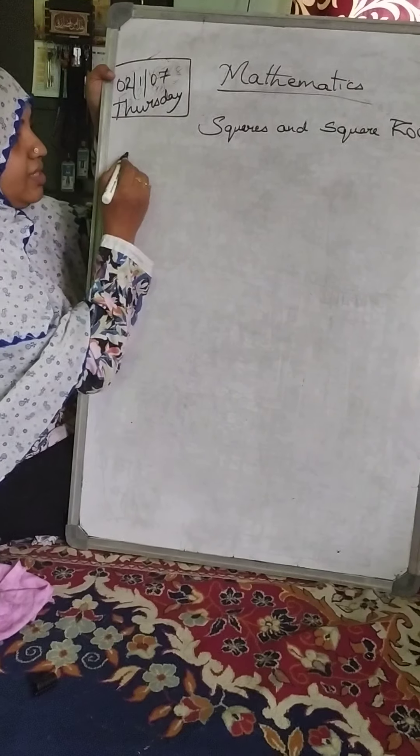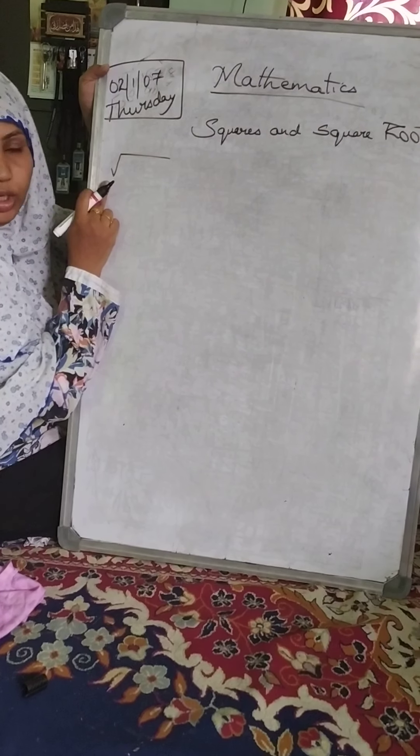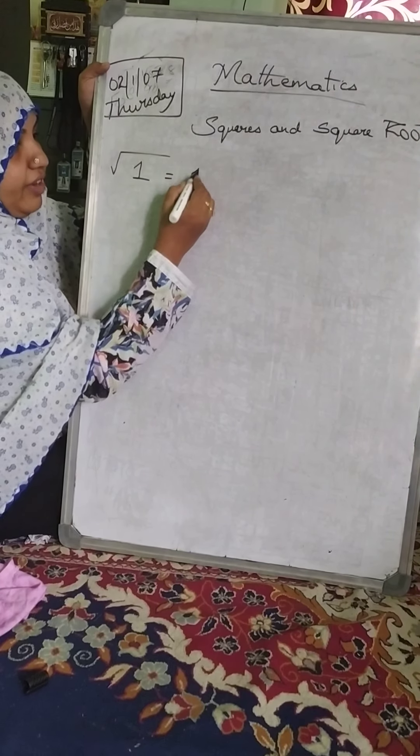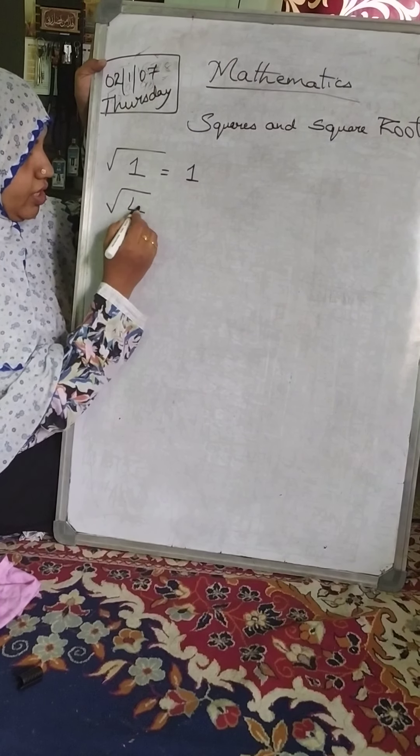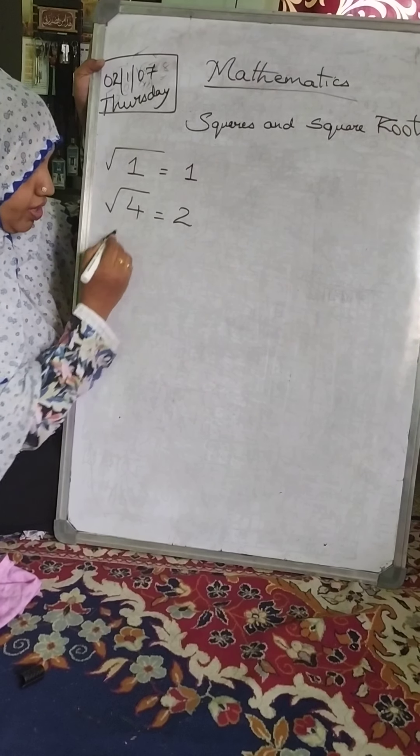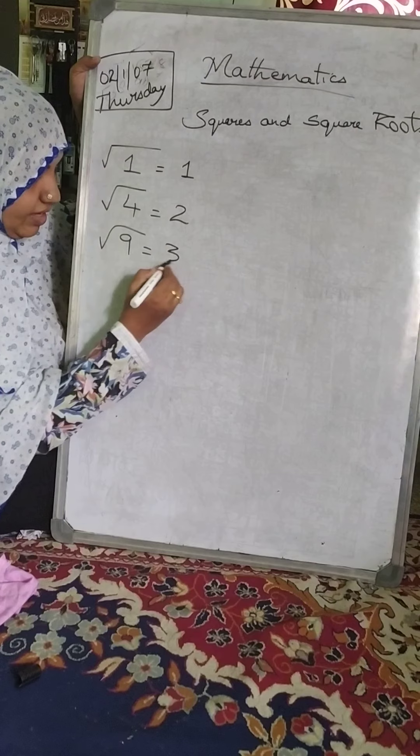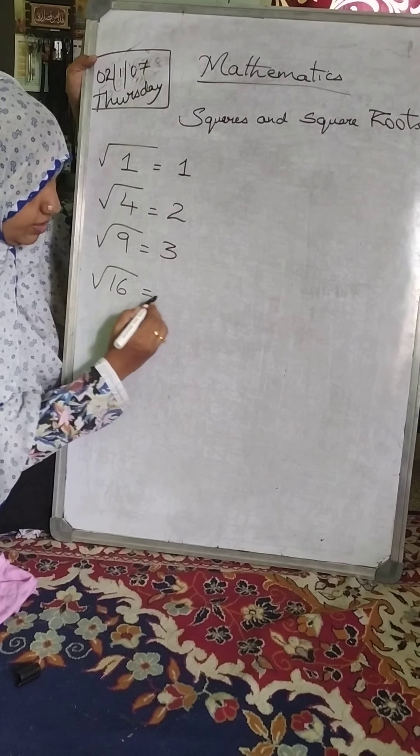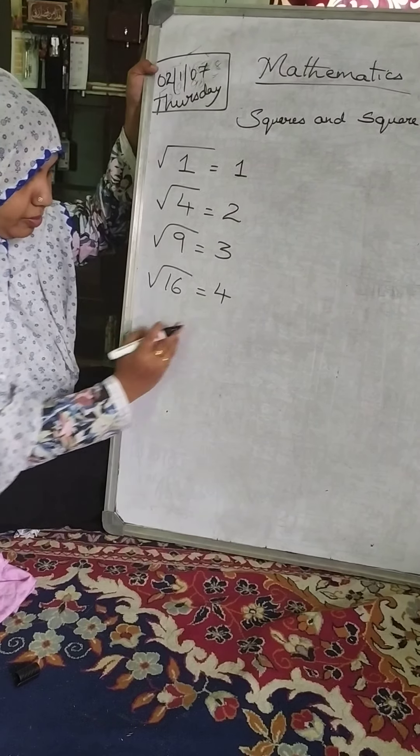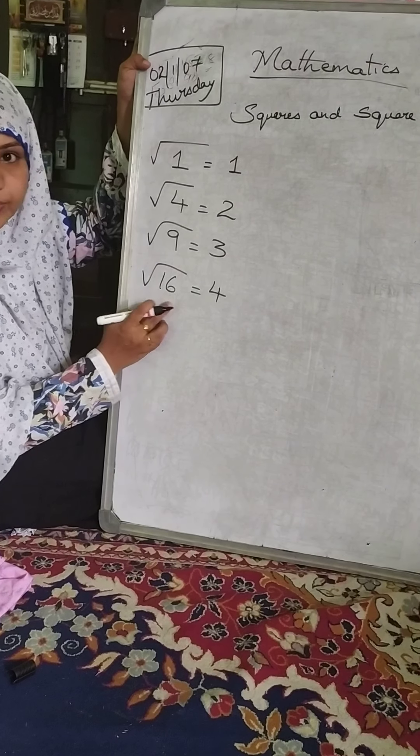Now square roots, this symbol is known as square root. Square root of 1 is 1, square root of 4 is 2, square root of 9 is 3, square root of 16 is 4, remember 4×4 are 16 so 16 comes inside.